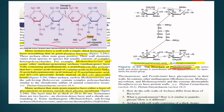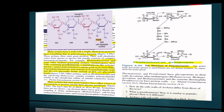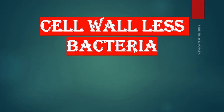Another difference is that in peptidoglycan, NAG and NAM are bound to each other by a beta-1,4 linkage. But in pseudomurein, N-acetyl glucosamine and N-acetyl talosamurinic acid are bound to each other by a beta-1,3 glycosidic bond. So this is all about the archaeal and bacterial cell wall structure.